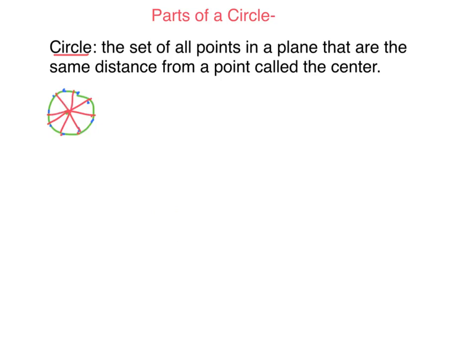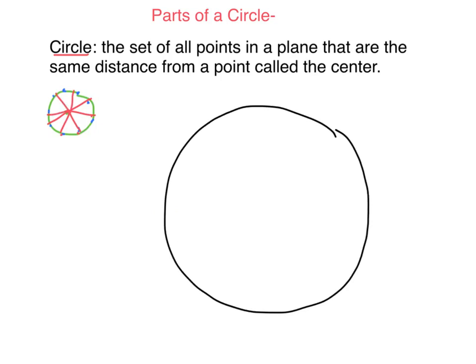We are going to draw a circle and label some special parts of the circle. The very middle point in the circle is called the center. Now, if I go from the center of the circle to the outside, that has a special name — that's called a radius.